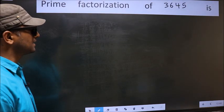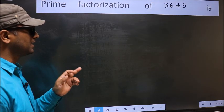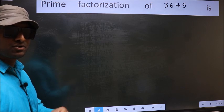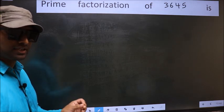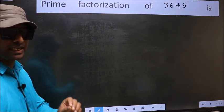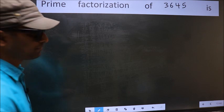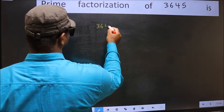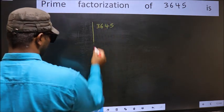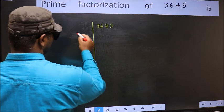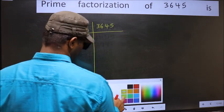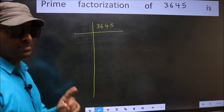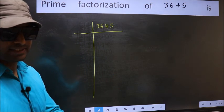Prime factorization of 3645. To do prime factorization, first we should frame it in this way: 3645. This is your step 1.